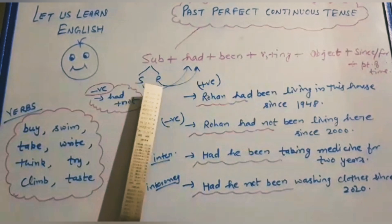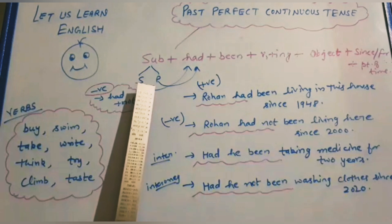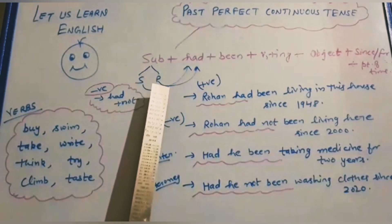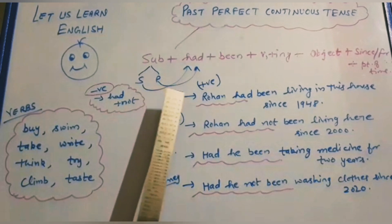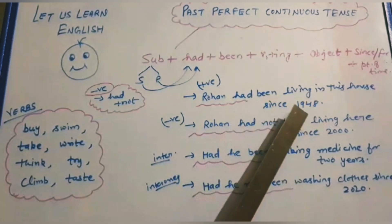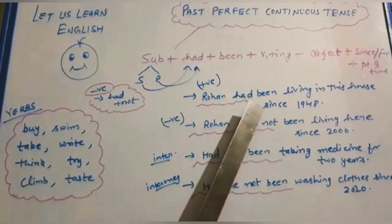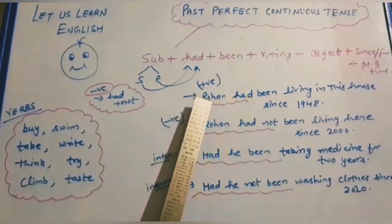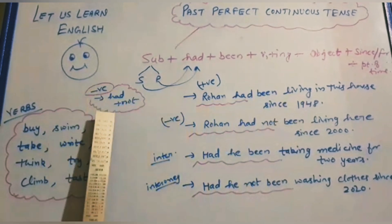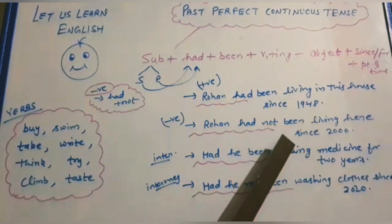There is no need to worry whether the subject is singular or plural — we can use had with singular as well as plural. For positive sentences: Rohan had been living in this house since 1948. In the negative sentences, we use had plus not: Ram had not been living here since 2000.